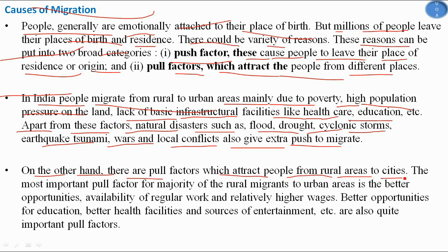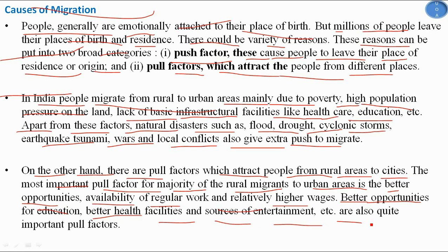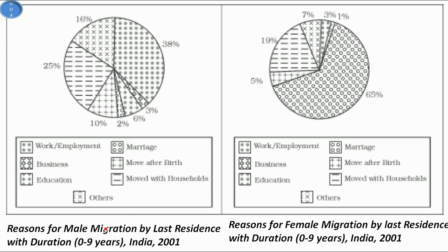On the other hand, pull factors attract people from rural areas to cities. The most important pull factor for rural migrants is better opportunities — availability of regular work and relatively higher wages, better opportunities for education, better health facilities, and sources of entertainment are all significant pull factors drawing people to urban areas.